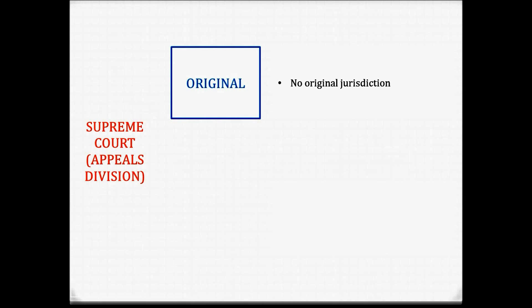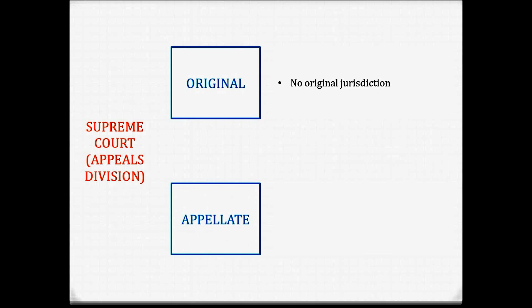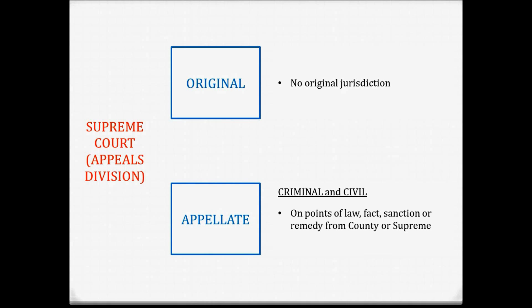The Supreme Court Appeals Division doesn't have an original jurisdiction — it's the specialist appeals court. In its appellate jurisdiction, in both criminal and civil cases, it hears appeals on points of law, fact, sanction or remedy from the County and Supreme Courts.